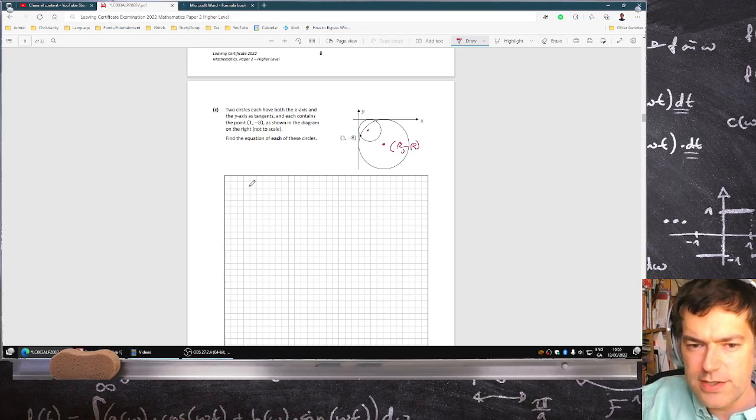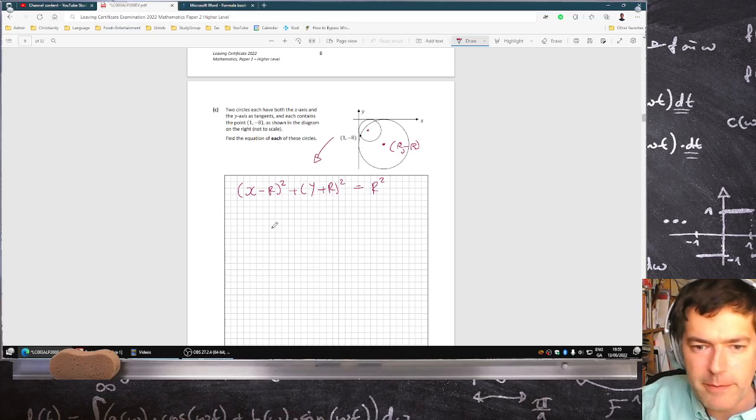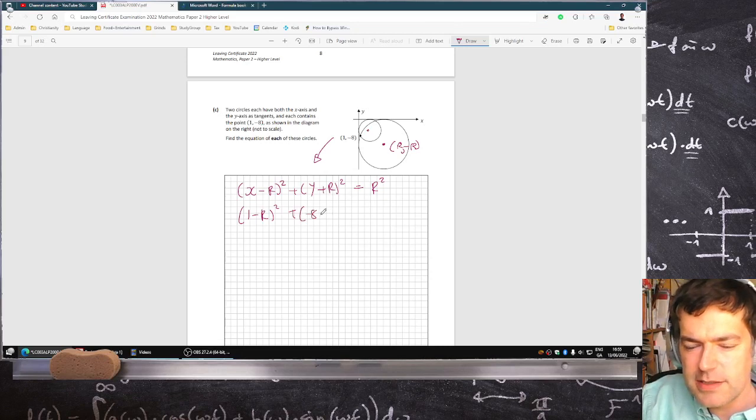So the equation of this circle will be x minus r squared plus y minus minus r squared equals r squared. And then I sub in this point, and I'll make it quadratic in r. So that will be 1 minus r squared plus minus 8 plus r squared equals r squared.